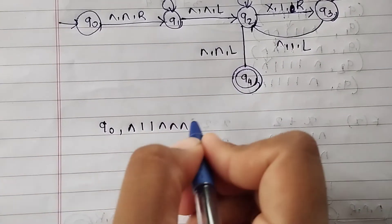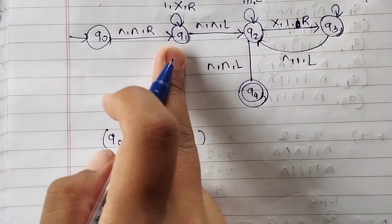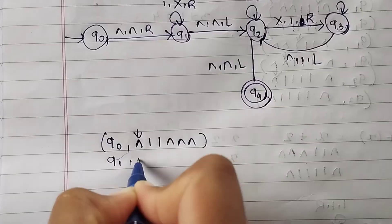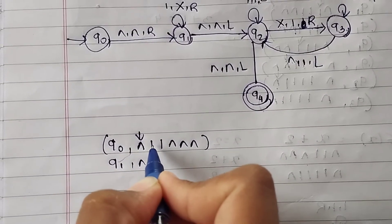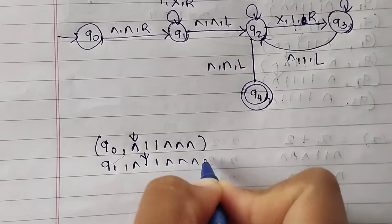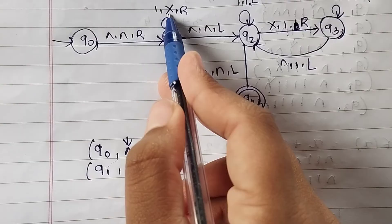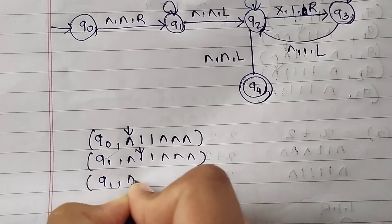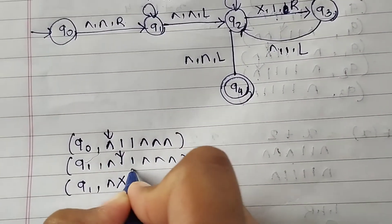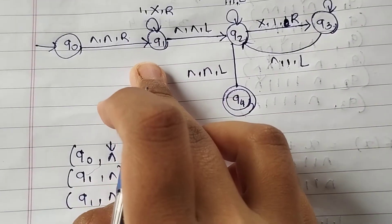Let's trace through the example. Starting at q0: initial tape is null, one, one, null, null, null. We read null, keep as is, move right to q1. Now in q1 we read the first one, then the second one - all kept as is moving right through q1 transitions until we reach the processing stage.